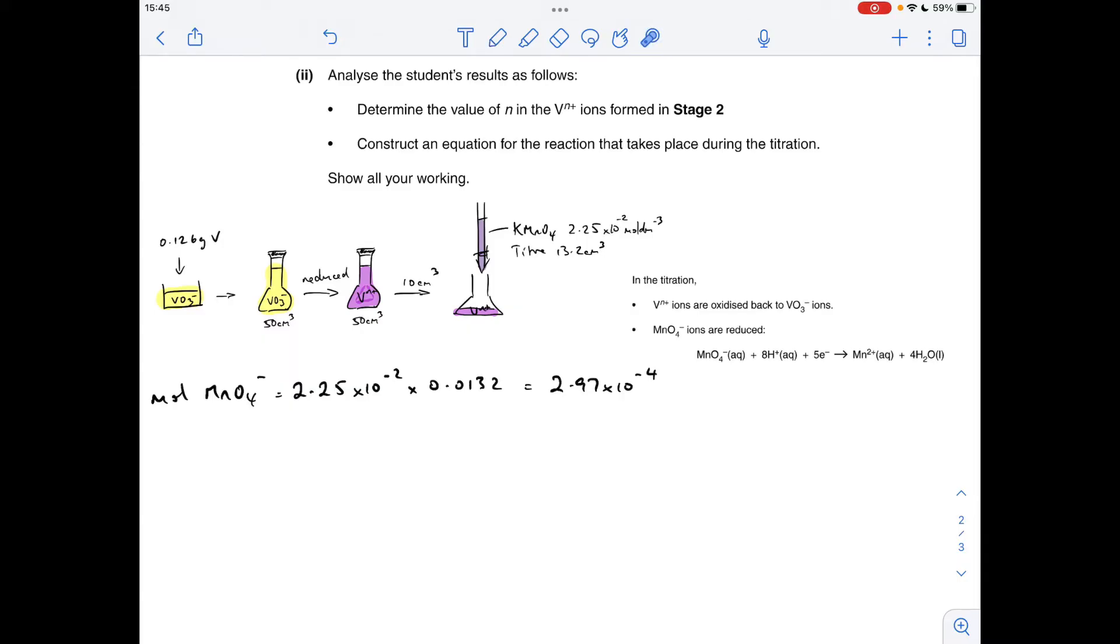Now, in a traditional titration, at this point, you would then just apply the mole ratio from the balanced equation to work out the moles of the other chemicals. So in this case, it would be the Vⁿ⁺. The problem is with this question, we don't know what the equation is. That's what we've got to try and find out.